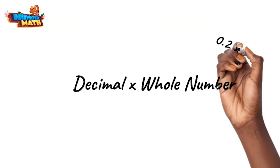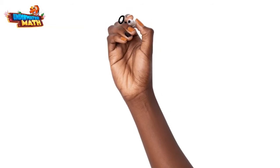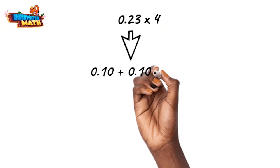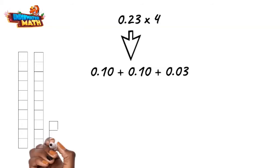Now let's multiply a decimal times a whole number. For example, twenty-three hundredths times four. We can break the decimal up into hundredths and represent each part using base ten blocks. We have two ten-hundredths and a three-hundredth, and the four in this problem says four groups of these.